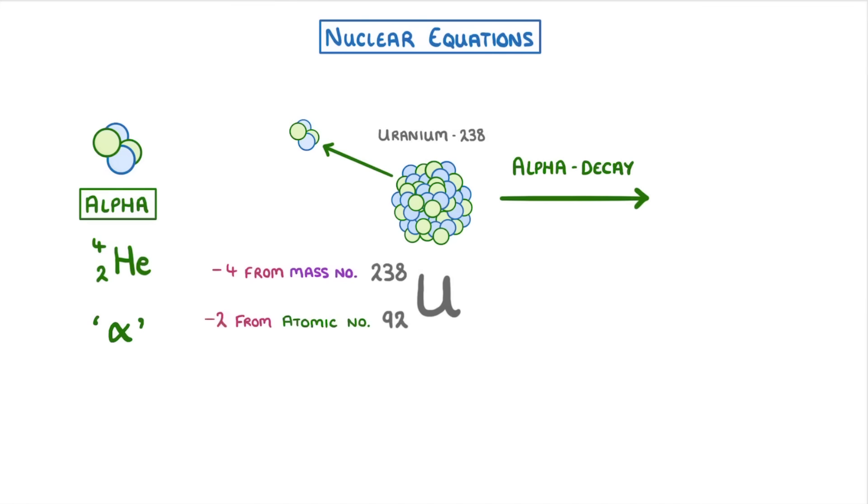So uranium-238 would go to form something with a mass number of 234 and an atomic number of 90. Because the atomic number has changed, it will now be a different element. So we'd have to check the periodic table to find out that it's now thorium. The last thing is to add our helium that was emitted, and then just double check that the mass and atomic numbers on each side of the equation are the same overall.